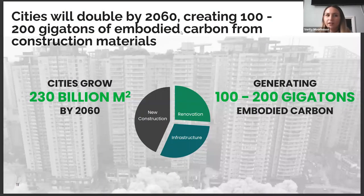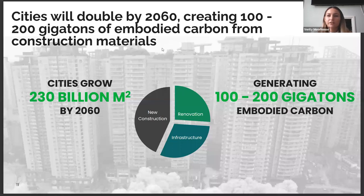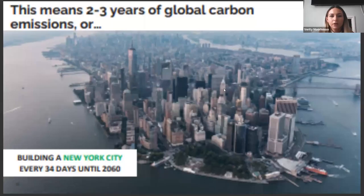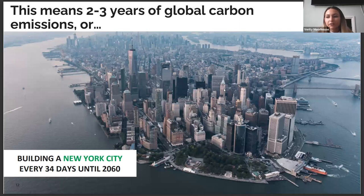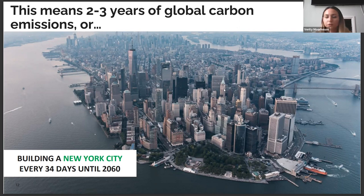Within the next 20 to 30 years — by 2060 — it is expected that our global building stock will double, and cities are going to grow by about 230 billion metres squared, which is going to result in about 100 to 200 gigatons of embodied carbon. That is the equivalent of building another New York City every 34 days until 2060, or approximately three years of global energy carbon emissions.